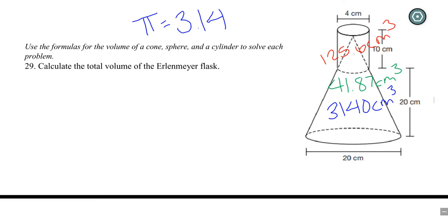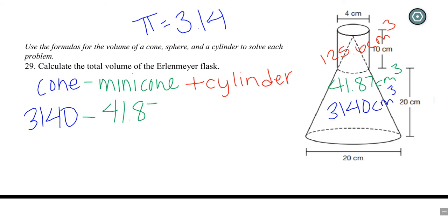So that one was 125.6 cubic centimeters. So then our final step is to just do what I had written earlier. The cone minus the mini cone and then add the cylinder. So I'm going to do exactly that. So the cone is 3,140 cubic centimeters. And then I'm going to minus the mini cone which is 41.87 cubic centimeters. And then we'll add the cylinder which is 125.6 cubic centimeters.